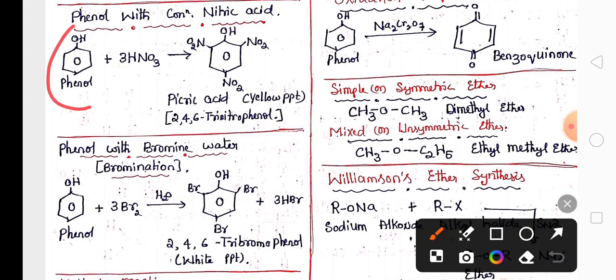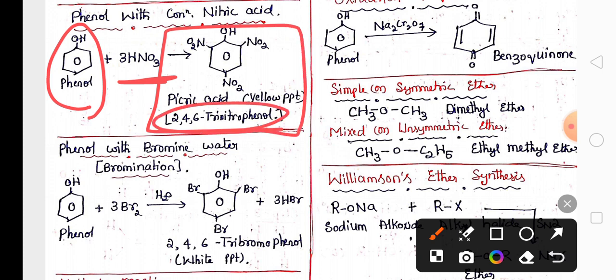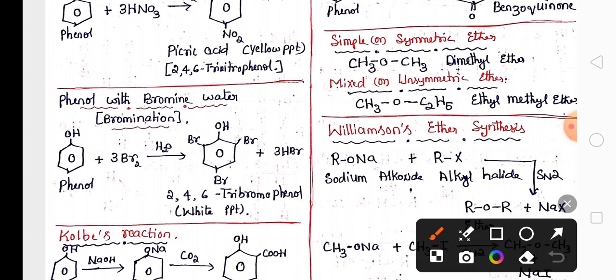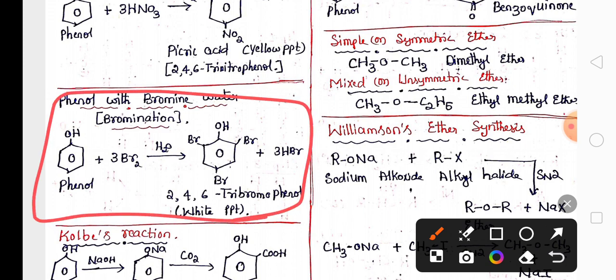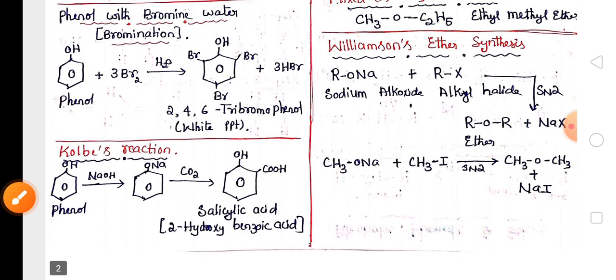Then how phenol reacts with concentrated nitric acid to give yellow precipitate picric acid. Its IUPAC name is important. And how phenol reacts with bromine water to give white precipitate 2,4,6 tribromo phenol is very important.